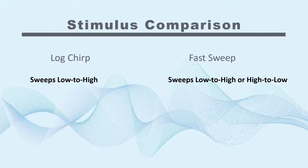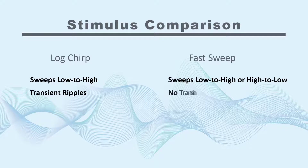When sweeping from low to high while testing loudspeakers, the woofer can continue to ring as the stimulus moves across the higher frequencies, affecting measurement results. Sweeping from high to low with a fast sweep solves this problem. A logchirp can also exhibit transient ripples at low and high frequencies due to the way the signal is analyzed, which is not an issue with fast sweep.